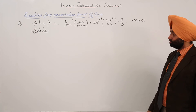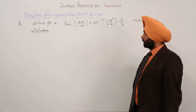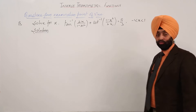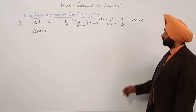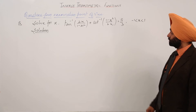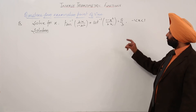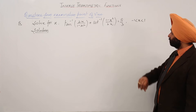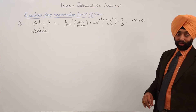Again a very nice question, an important one. Now we have to solve it for x, and the question is: tan inverse of 2x upon (1 minus x square) plus cot inverse of (1 minus x square) upon 2x is equal to pi by 3.